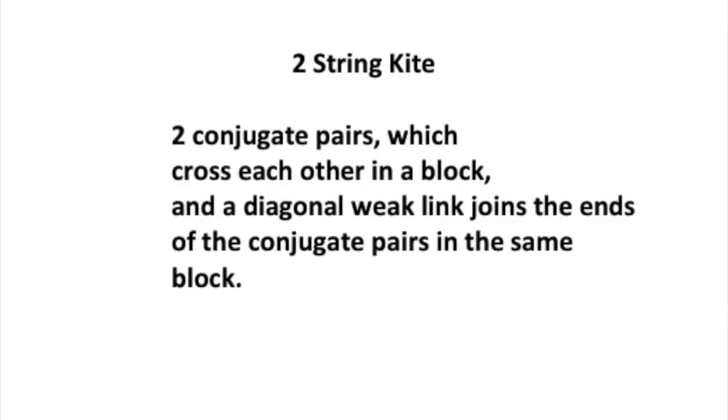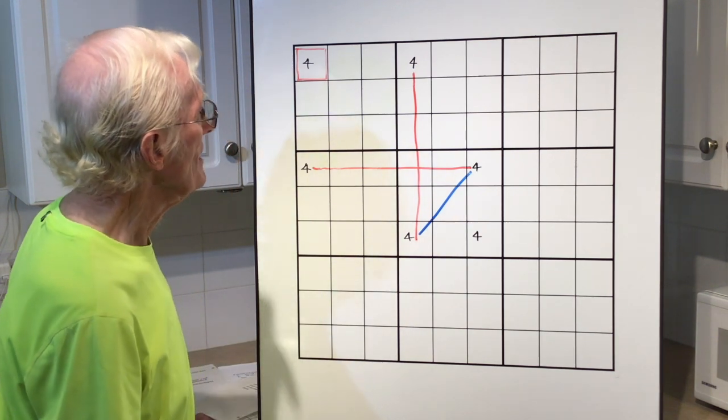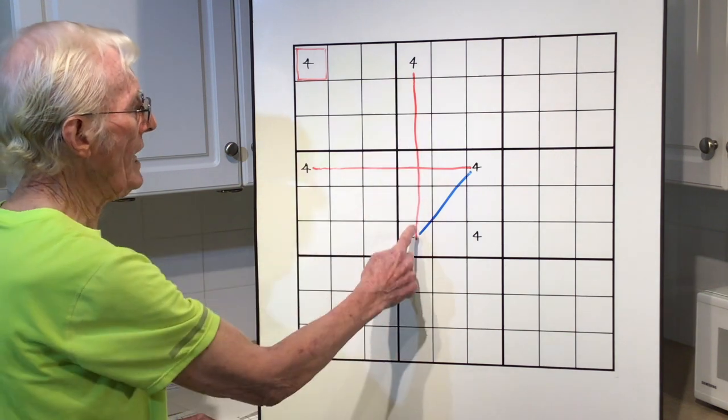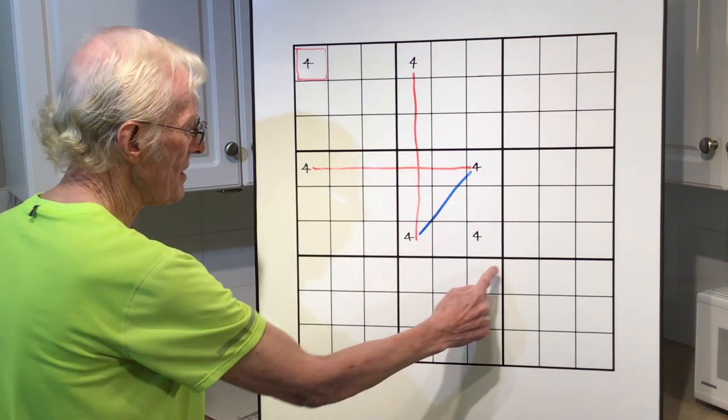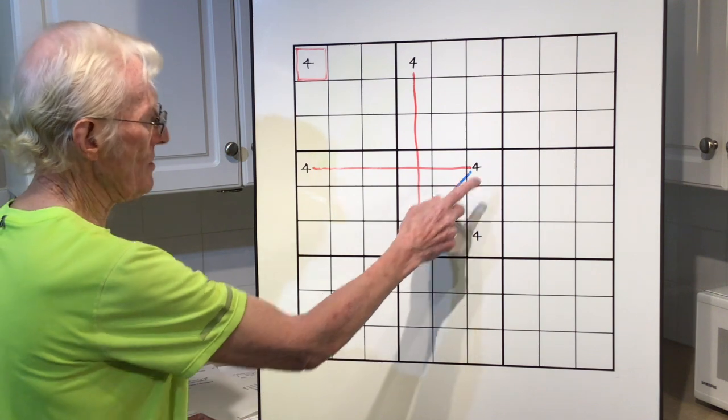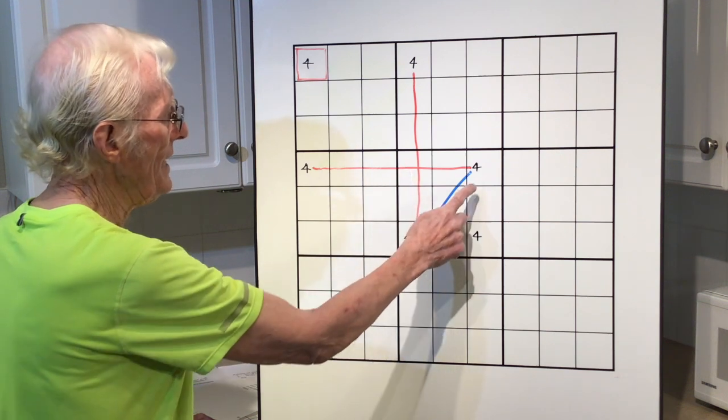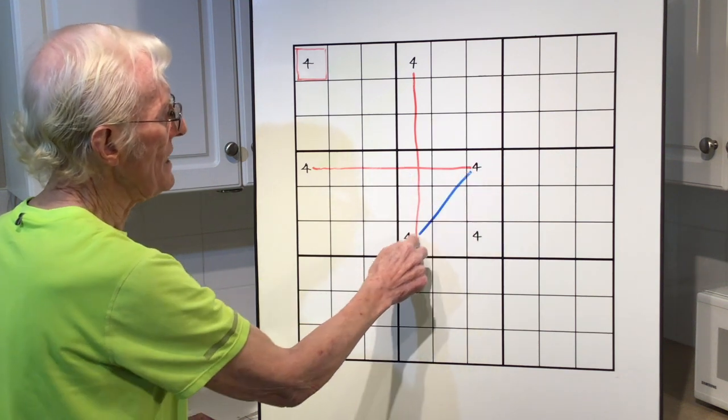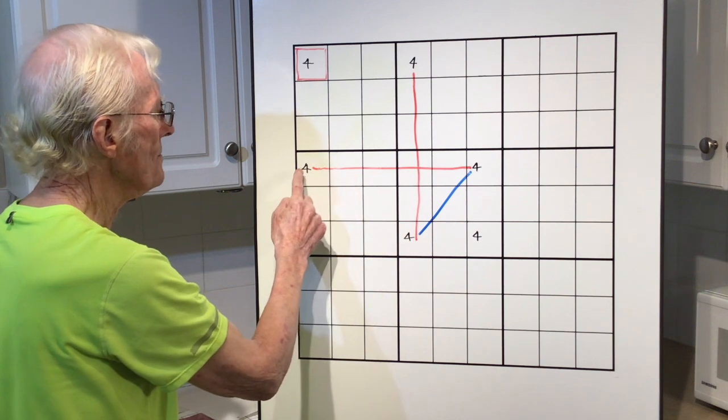This is an example of a 2 string kite. Two conjugate pairs which cross each other in a block, and a diagonal weak link joins the ends of the conjugate pairs in the same block. The red lines are strong links, and they actually cross each other in this block. Then they have a tail, and it is a weak link. So there's three links: strong, weak, and strong.